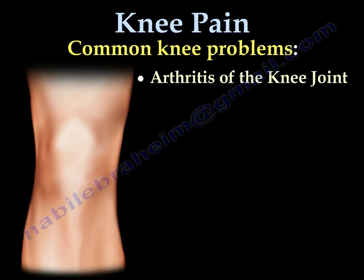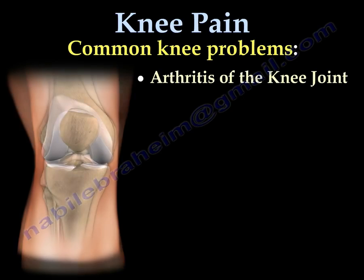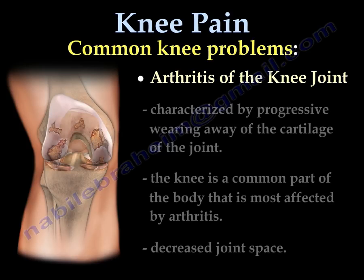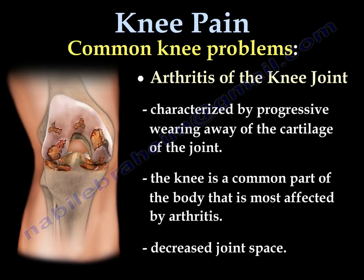Arthritis of the knee is characterized by progressive wearing away of the cartilage of the joint. The knee is the most common part of the body affected by arthritis, and you find that the joint space becomes narrowed.